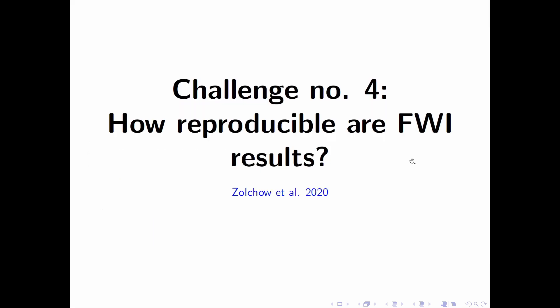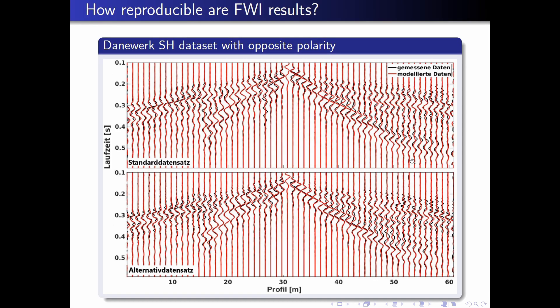Challenge number four is: how reproducible are full waveform inversion results? This is a very complex but very important question, especially if you want to interpret details in your full waveform inversion result. At the Dannewerk, we acquired SH data by dropping a hammer onto a shear wave anchor. You can drop the hammer either from the left or right side, leading to two datasets with different polarity. These two datasets were acquired with exactly the same acquisition geometry but different polarity of source excitation. Black seismograms denote field data and red seismograms the modeled data.